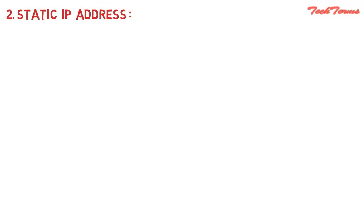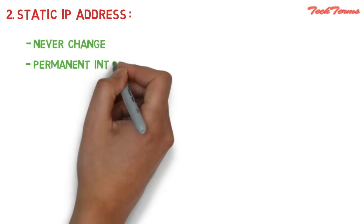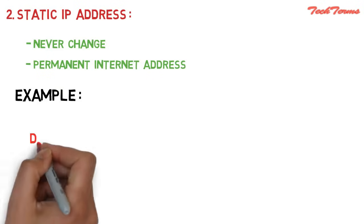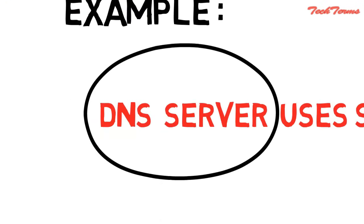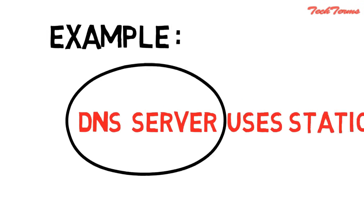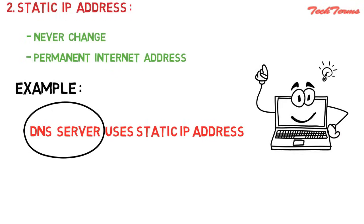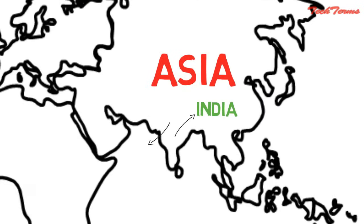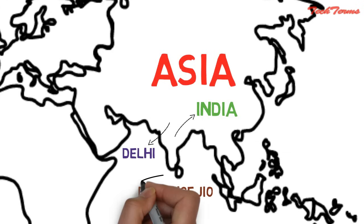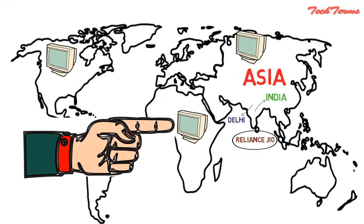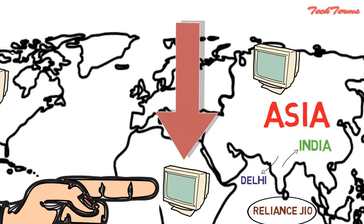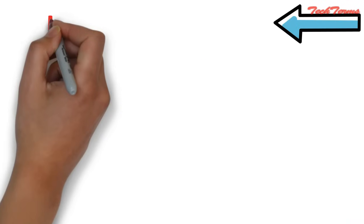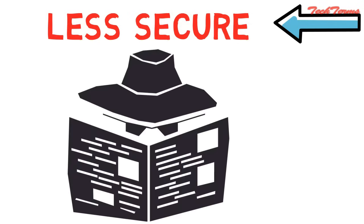Static IP addresses never change — they serve as a permanent internet address. Static IP addresses are used by DNS servers, which are computers that help you to open a website on your computer. Static IP addresses provide information such as which continent, country, and city a device is located in, and which Internet service provider provides the internet connection to that device. Once we know the Internet service provider, we can trace the location of the device connected to the internet. Therefore, IP address allows billions of digital devices to be pinpointed. Static IP addresses are considered somewhat less secure than dynamic IP addresses because they are easier to track.